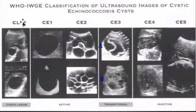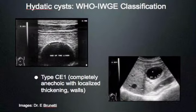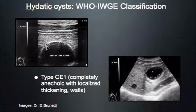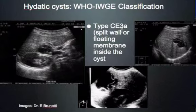The WHO working group has classified echinococcal cysts as CE1 through CE5, with CE3 subdivided into 3a and 3b. CE1 is completely anechoic with localized thickening of the wall — you can sometimes see the double layer of the cyst wall, which is never seen in a normal liver cyst. This is the most difficult stage to differentiate from a normal cyst; serology may help here.